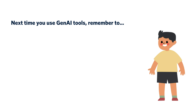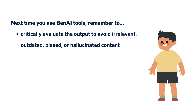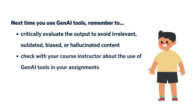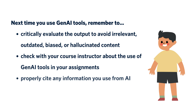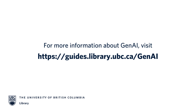Next time you use Gen AI tools in your assignment like Ash, remember to critically evaluate the output, as the generated content may be irrelevant, outdated, biased, or even a hallucination. Remember to check with your course instructor about the use of Gen AI tools in your assignments — it is our responsibility as students to adhere to instructors' policies. Also, remember to properly cite any information you use from AI, even though an AI generated it. It still needs to be cited like any other content you reference. We hope that you have learned some handy skills to evaluate text and images from Gen AI.